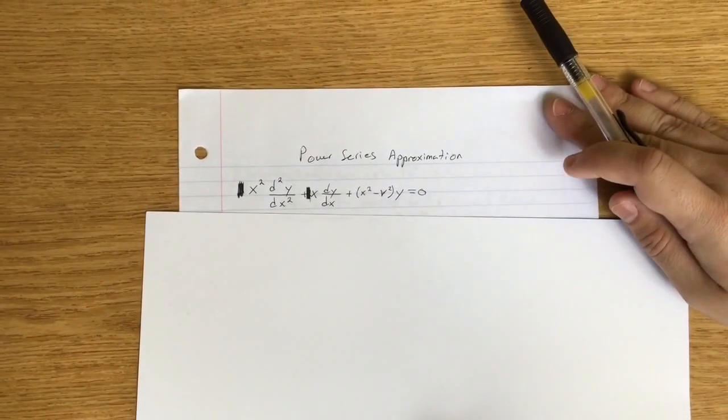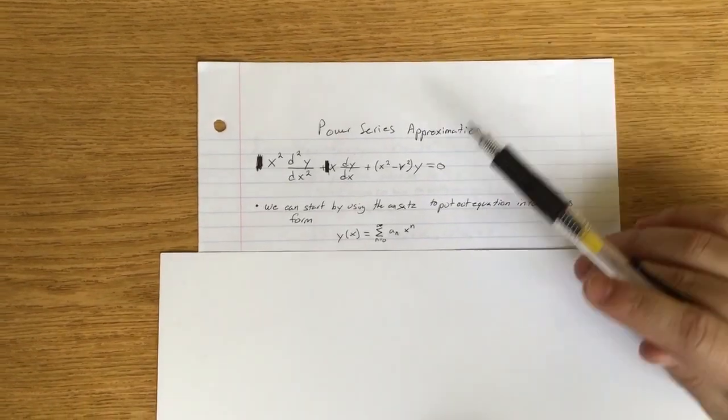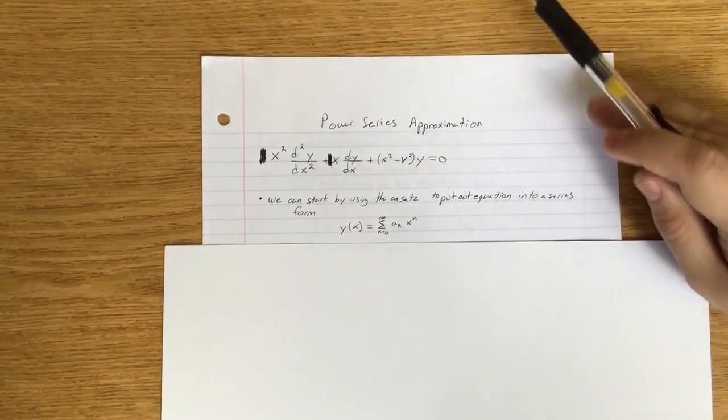So here we have our Bessel function. First, what we want to do is set up an ansatz. The ansatz is going to let us convert this into a power series form.